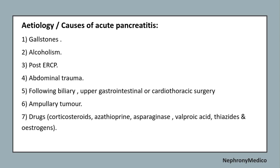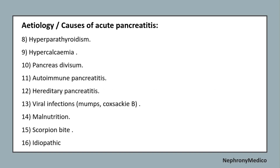Etiology or causes of acute pancreatitis include gallstones, alcoholism, post-ERCP, abdominal trauma, following biliary, upper gastrointestinal or cardiothoracic surgery, embolism, tumor, or drugs. Additional causes include hyperparathyroidism, hypercalcemia, pancreas divisum, autoimmune pancreatitis, hereditary pancreatitis, viral infections, malnutrition, scorpion bite, and idiopathic causes.